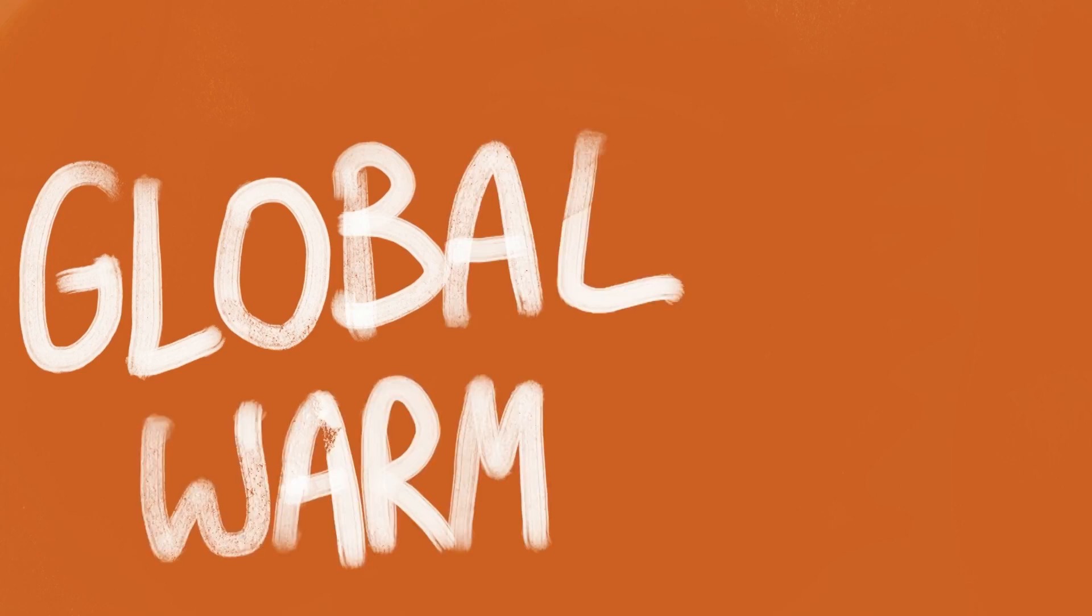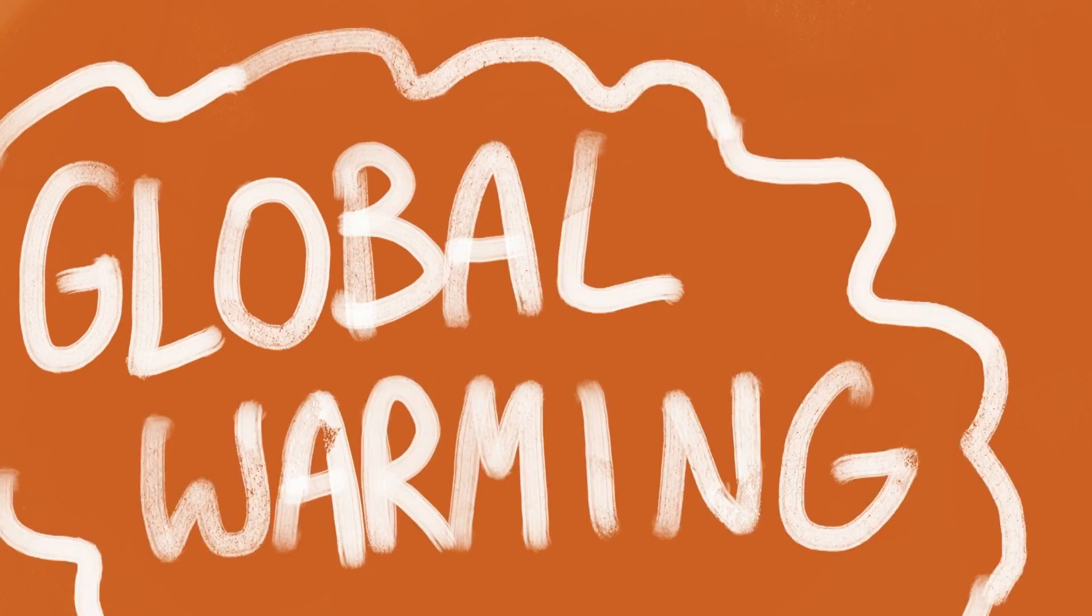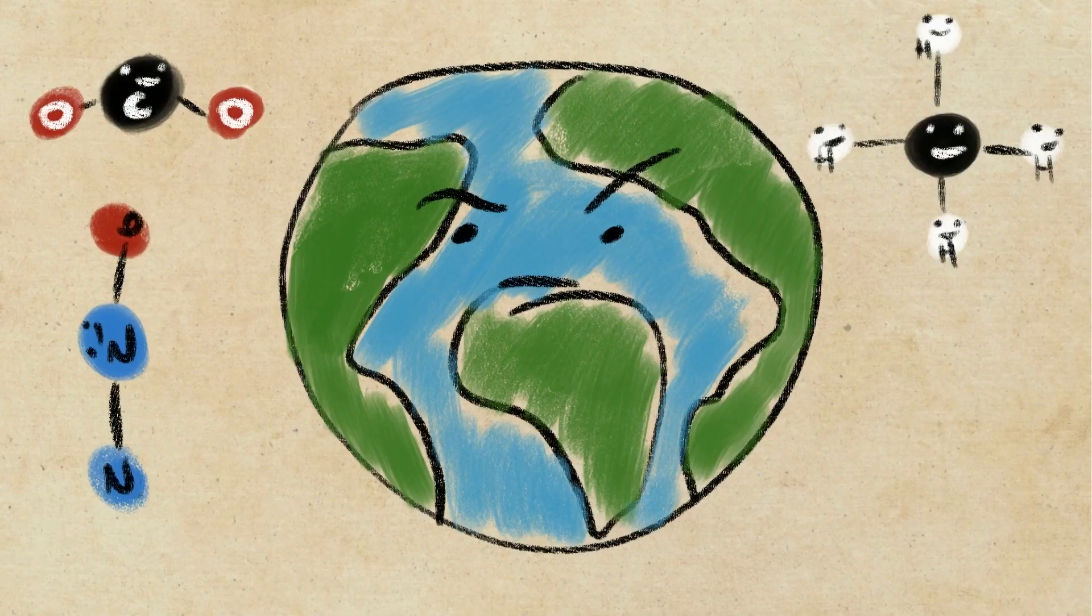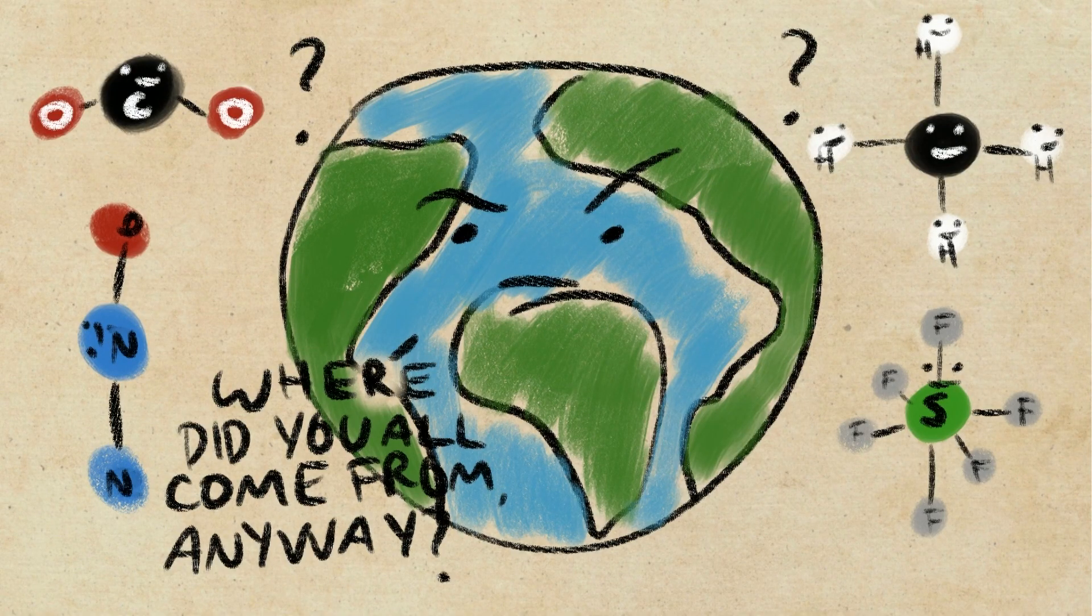And yes, you guessed it, the unusual increase of the Earth's surface temperature is called global warming. So what exactly are the greenhouse gases in the atmosphere anyway? Well, let's break down five main types.